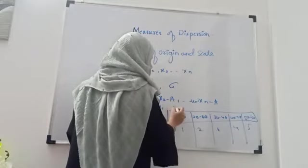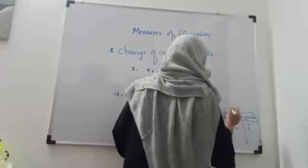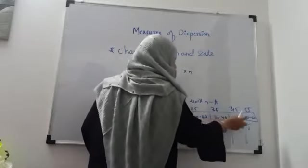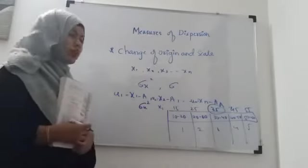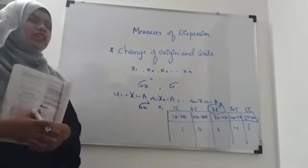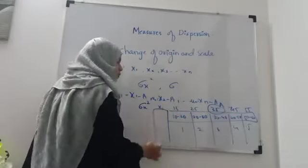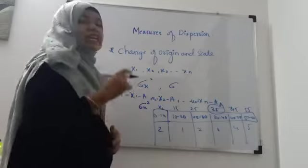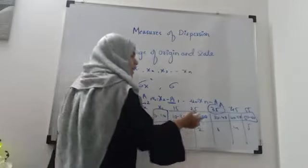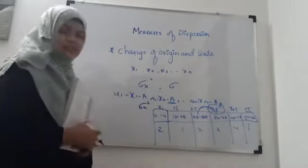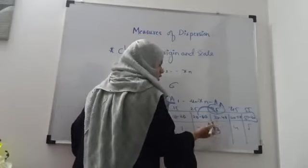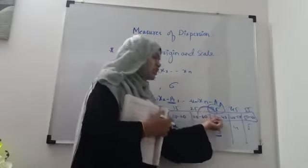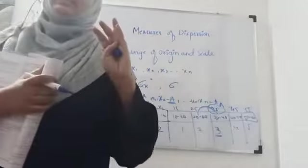Here the odd number of observations — 1, 2, 3, 4, 5 — so the middle value will be considered as A. If you have an even number of classes, say one more column 0–10 is added, you have to consider the two middle classes and look at the frequency. Whichever class has the maximum frequency, we will consider that class mark as A. We will see this in detail while doing the problem.